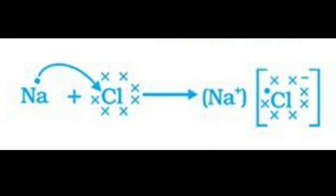Sodium loses one electron and this forms an ionic bond. Ionic bonds are the chemical bonds formed by the transfer of electrons from one atom to another.